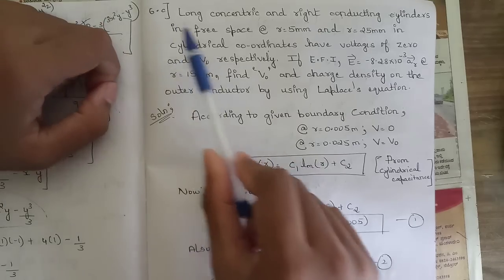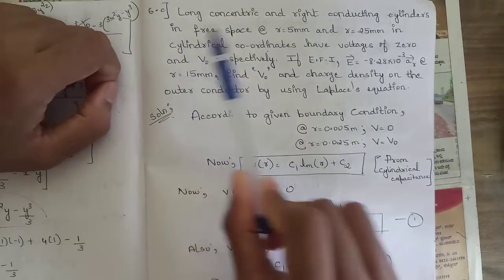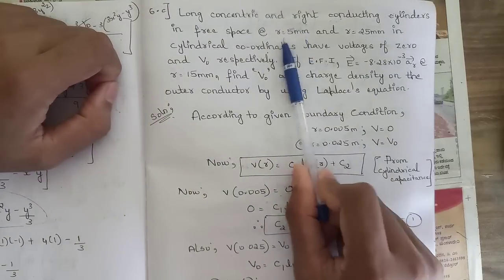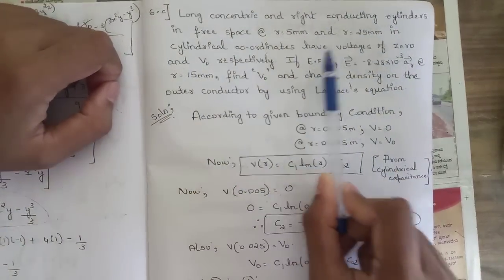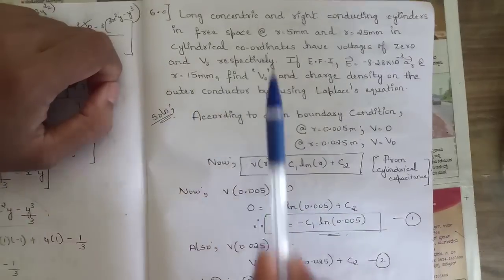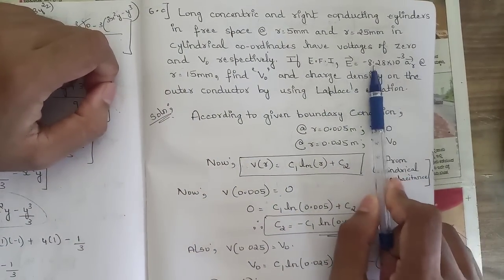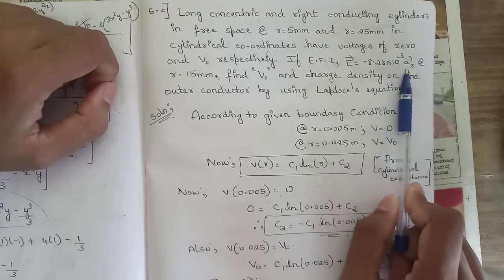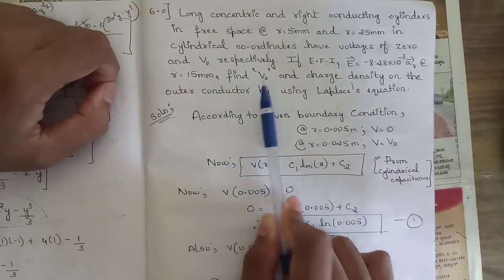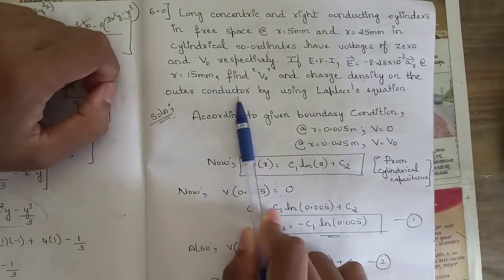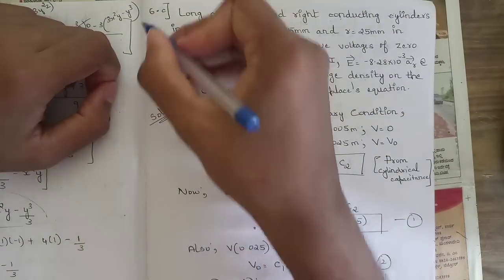Question 6c: Two long concentric right conducting cylinders in free space at r = 5 mm and r = 25 mm in cylindrical coordinates have voltages of 0 and V₀ respectively. If the electric field intensity E = -8.28 × 10⁻³ aᵣ at r = 15 mm, find the value of V₀ and charge density of the outer conductor using the Laplace equation.